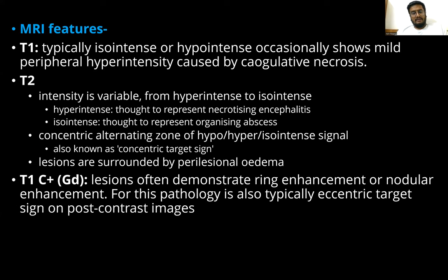MRI features: on T1-weighted imaging, it is typically iso-intense or hypo-intense, occasionally showing mild peripheral hyper-intensity due to coagulative necrosis. On T2-weighted imaging, the intensity is variable from hyper-intense to iso-intense. Hyper-intensity generally represents necrotizing encephalitis, while iso-intensity represents the organizing abscess. Concentric alternating zones of hypo-, hyper-, and iso-intense signals are generally known as the concentric target sign.